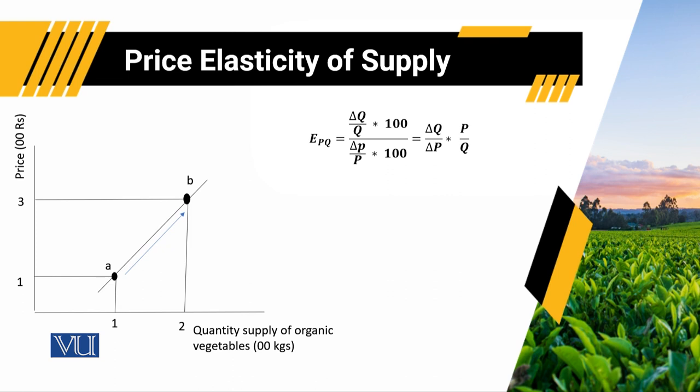Now on screen, we will compute what is the price elasticity of supply at point A and at point B. If we compute price elasticity of supply at point A, we first need to find out what is change in quantity supply and change in price along this particular supply curve. Our assumption is that there is a linear association between quantity supply and price. If we move from point A to point B, then change in quantity supply is equal to 1.